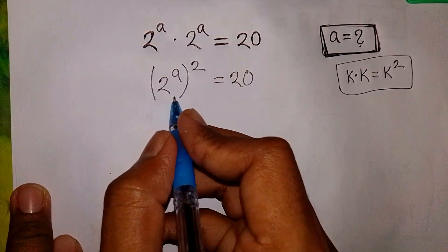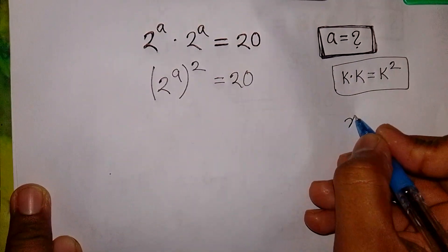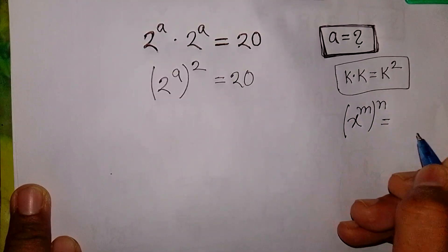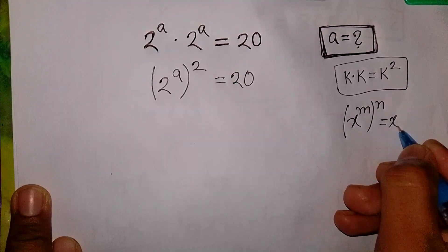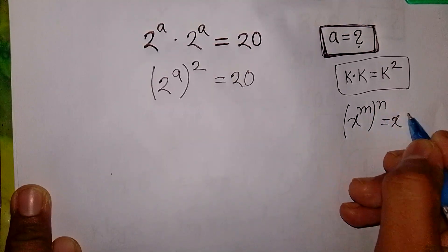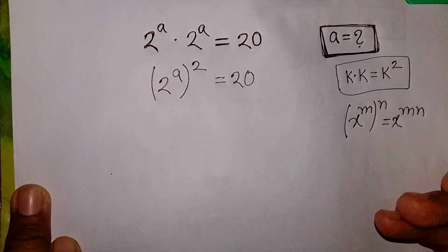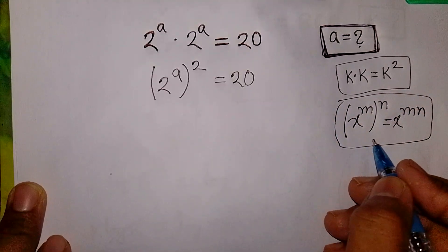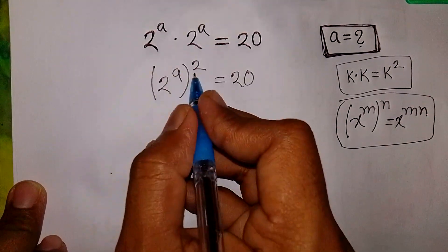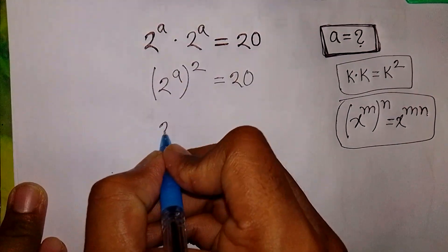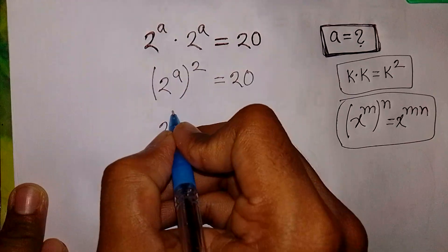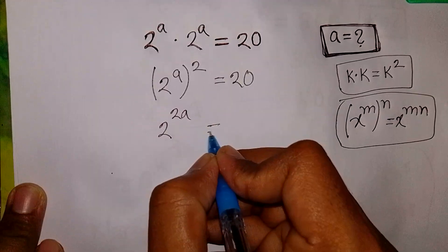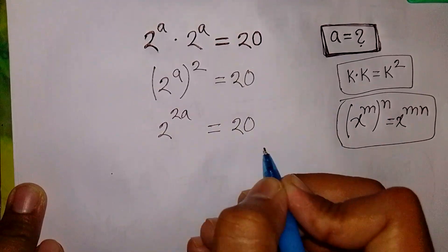Now we apply the exponential rule that X power M, bracket power N, is equal to X power of M times N. So according to this rule, 2 power A bracket power 2 is the same as 2 power of 2A — that means 2A is equal to 20.